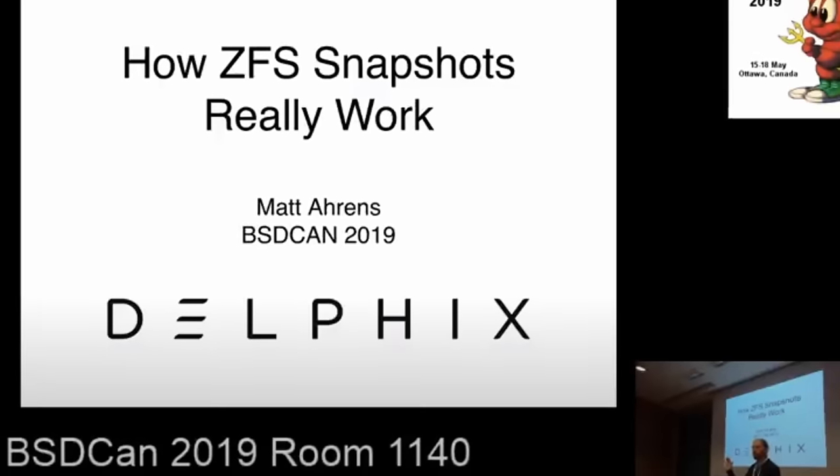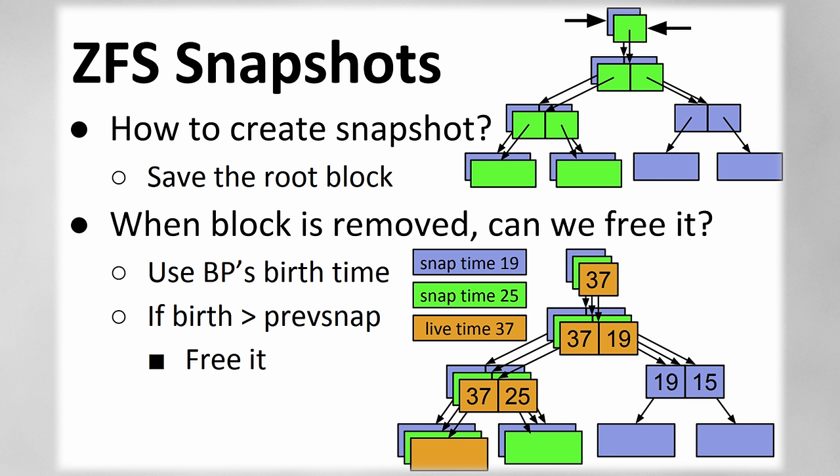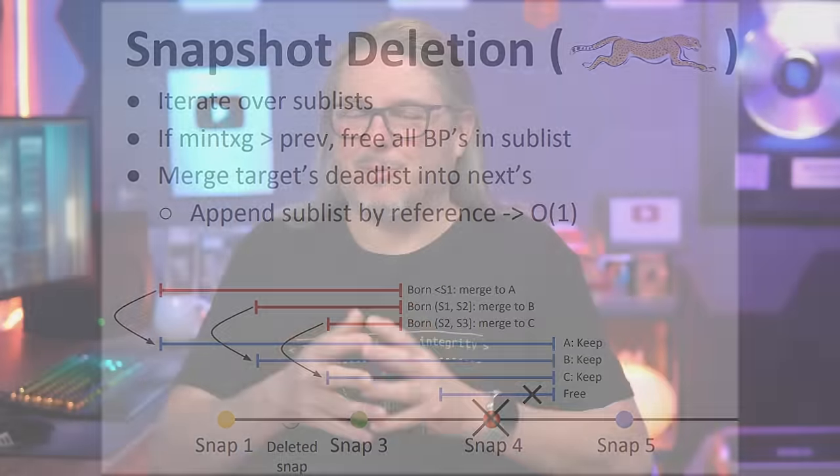For those of you that want to know the really interesting details for how these snapshots work, there's a great talk given at FreeBSD CAN 2019 that you'll find linked down below. It does a great job of covering the details such as how do you figure out which blocks to delete when you take a snapshot out of the middle, because that's completely supported. I'm going to be covering in this video the more functional side of how to set them up, how they work, how they present in Windows, and how to see things from the command line.